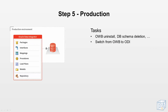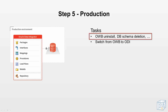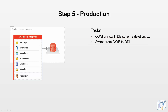The last step in the conversion process is the production step. In this step, we will remove the original OWB project and all its dependencies from the production environment and switch the scheduling tool to the new ODI project. Now the conversion is done and you are up and running.